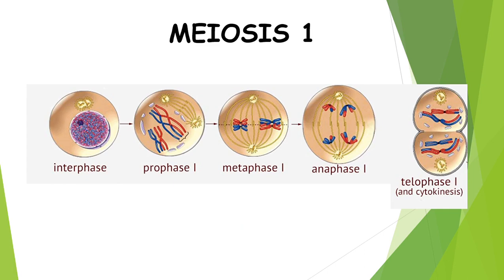Meiosis I is where a lot of the magic and fun stuff happens, so we need to go very in-depth on each phase. As with mitosis, the first phase is interphase. Before this cell is divided into its gamete, we still have to have DNA replication occurring during interphase — we duplicate the DNA.